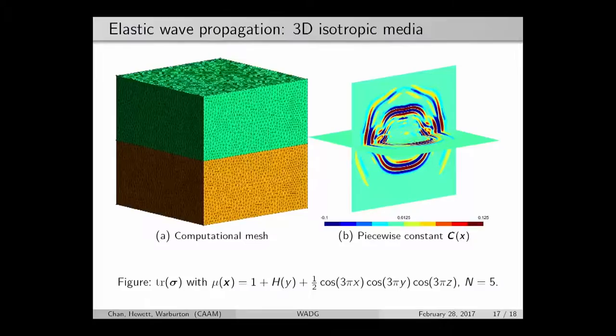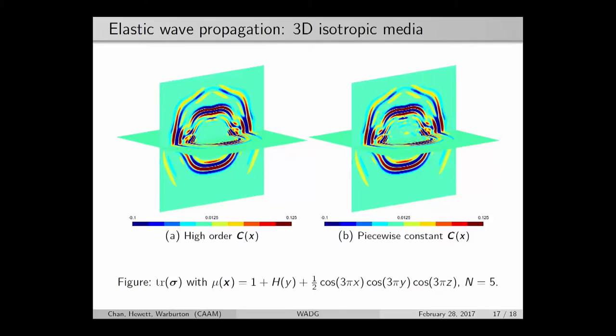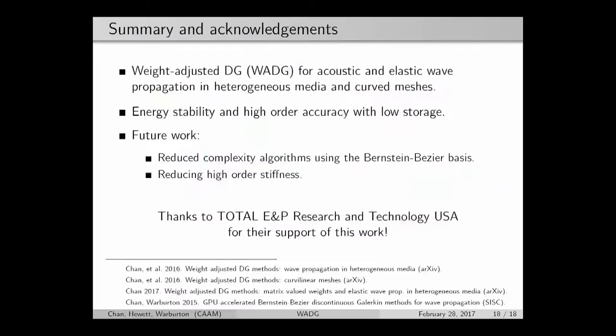If I run this with a piecewise constant approximation of the constitutive stress tensor, then you end up with some spurious reflections that appear in the middle of your wave. If you use the weight-adjusted DG method and instead switch to a high-order approximation of C, then these reflections again all disappear.